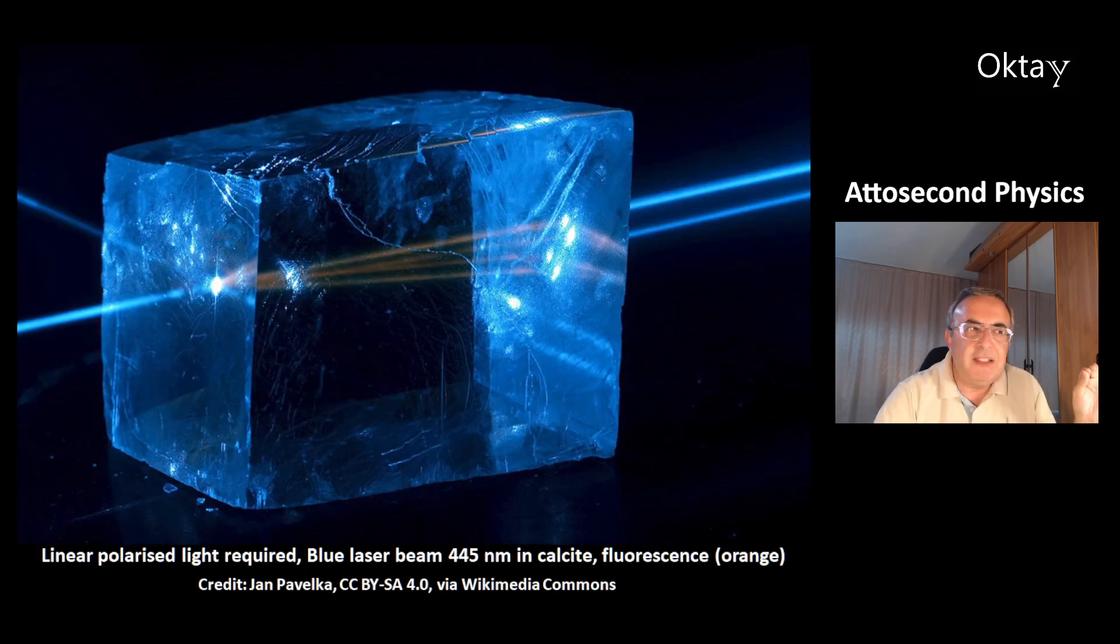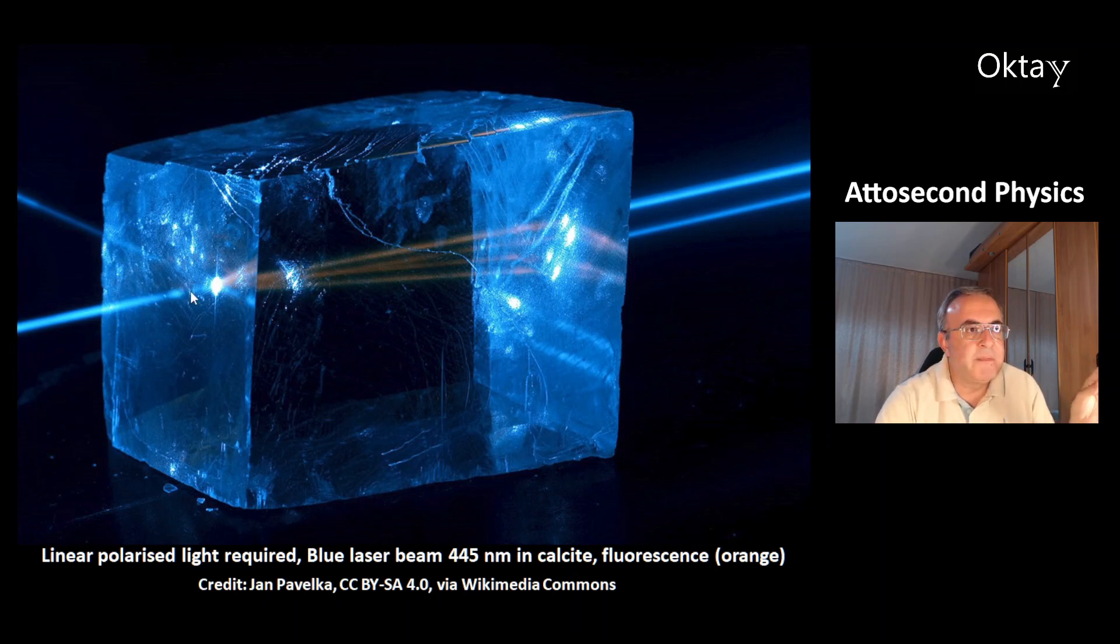For this you need linear polarized light. This is essential. This is a picture of a blue laser beam with 455 nanometers in calcite. It comes from here. Inside the calcite you can see the orange fluorescence light. And at the right you can see 2 beams of the linear polarized laser light.